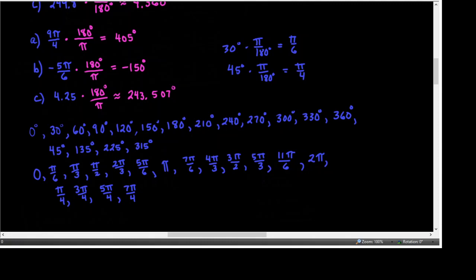These end up being angles we need to know all kinds of things about. You can map them: 0 degrees equals 0 radians, 30 degrees equals pi over 6 radians, 60 degrees equals pi over 3 radians, and so on — each degree measure maps to its equivalent radian measure.